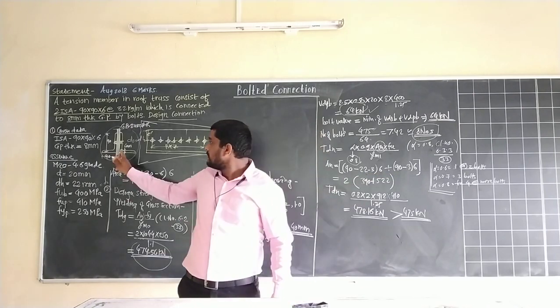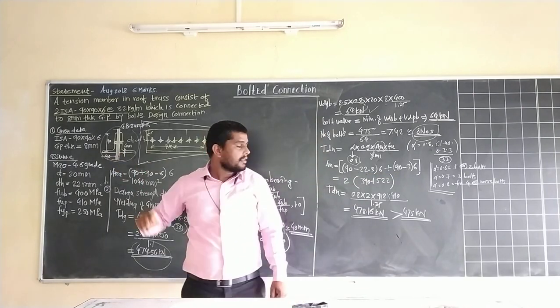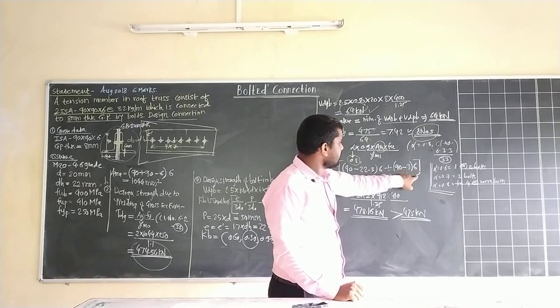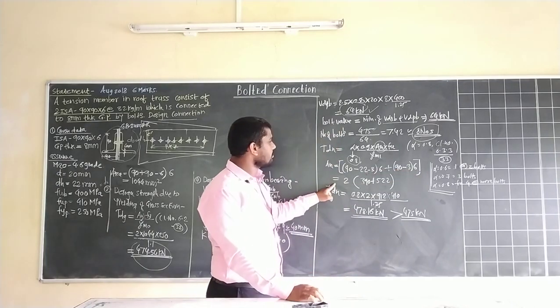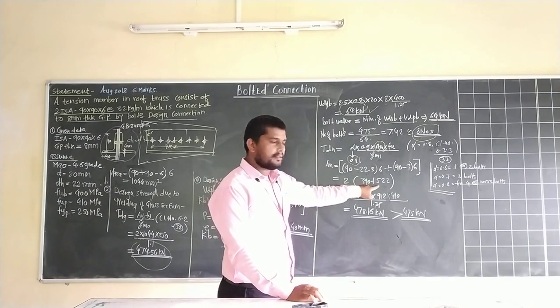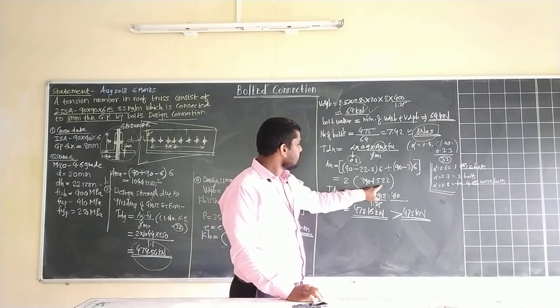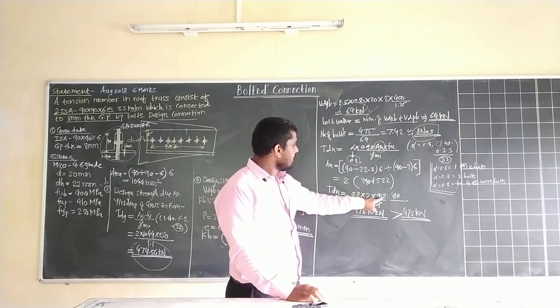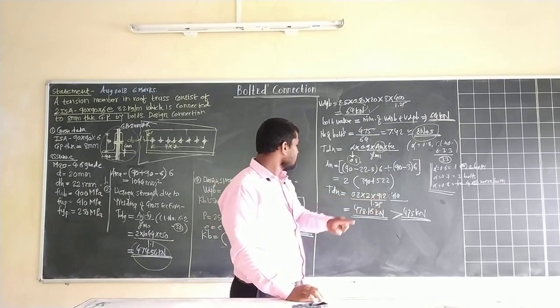Again angle connection: (90 minus 3) into 6. Final answer will be twice of this: 390 plus 522, total 912 mm square.